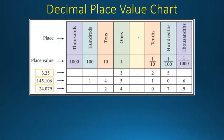So let's take 3.25. The 3 will be in the ones place, then we have the decimal point, then 2 will be in the tenths place and 5 will be in the hundredths place. Now let's take 145.106.